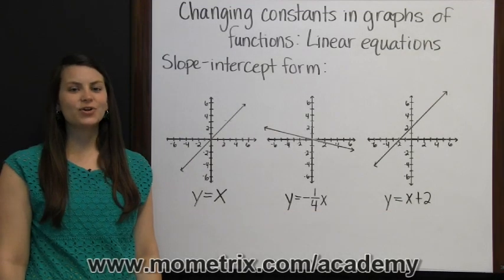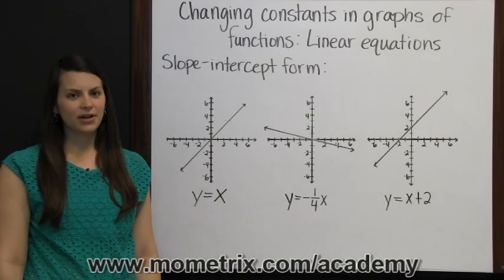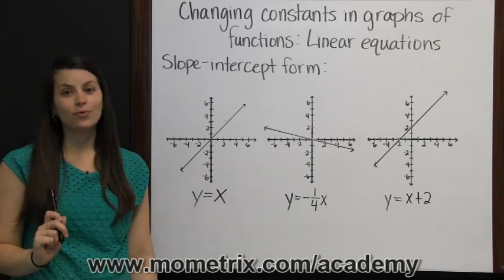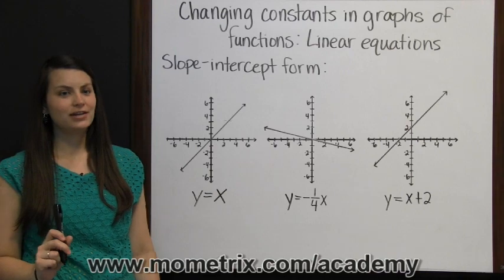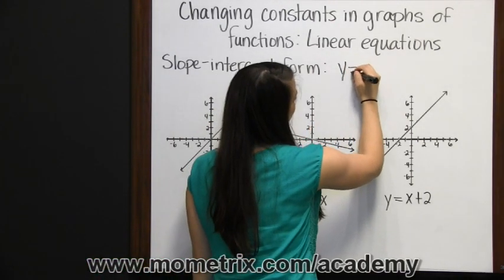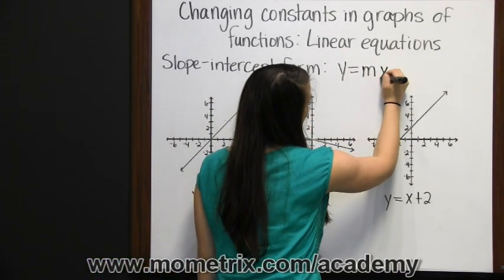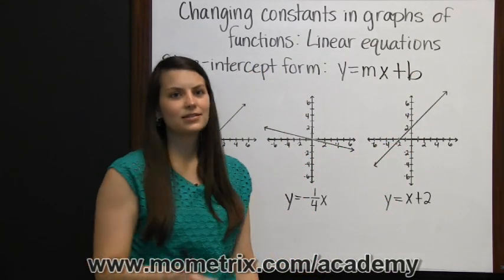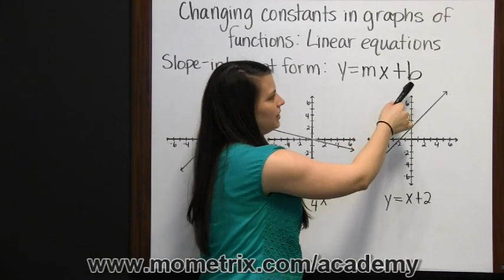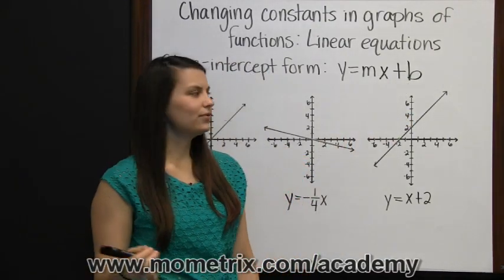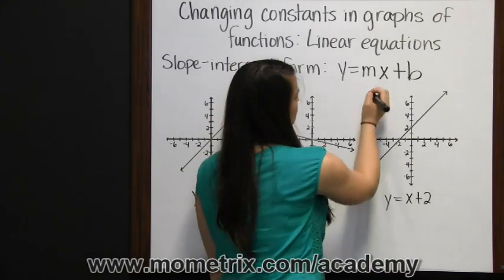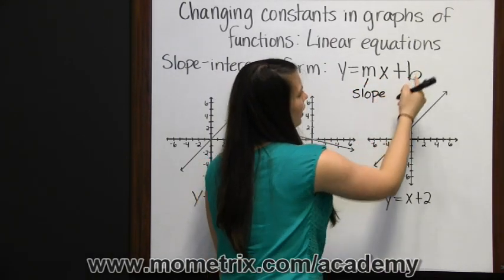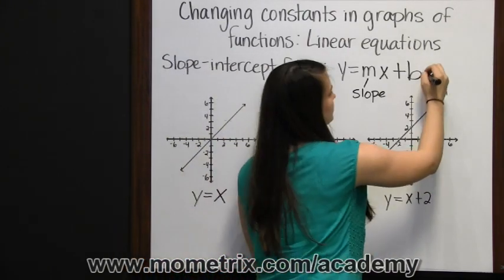Changing constants in graphs of functions: linear equations. The slope-intercept form of a linear equation is y equals mx plus b, where the constants are the m and the b. The x and the y are the variables. m stands for slope, while the b is the y-intercept.